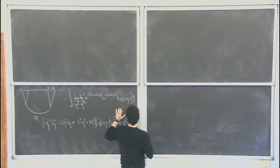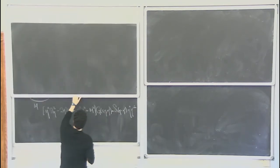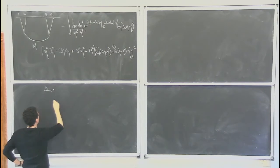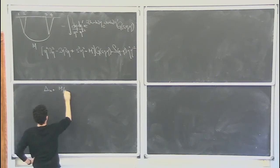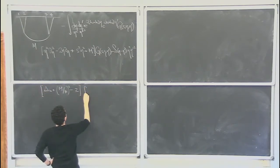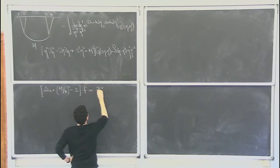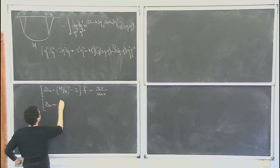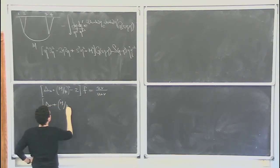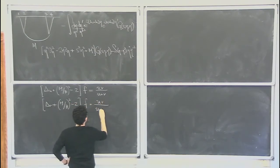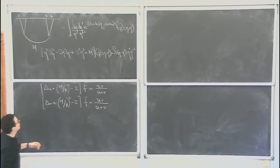Yesterday I was trying to justify this equation: delta u plus something like m squared over h squared — and to be more precise, there is a minus 2 here. If you do the computation carefully, it equals uv divided by u plus v, and likewise delta v over u plus v.